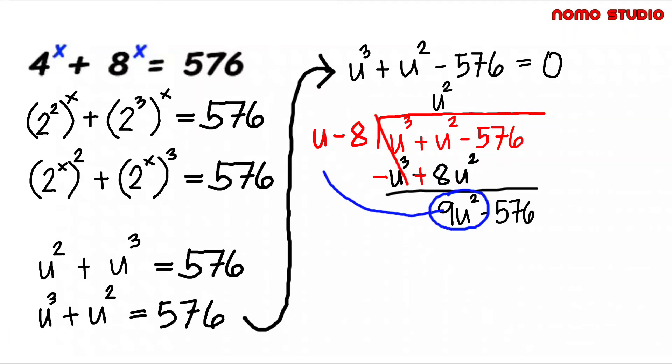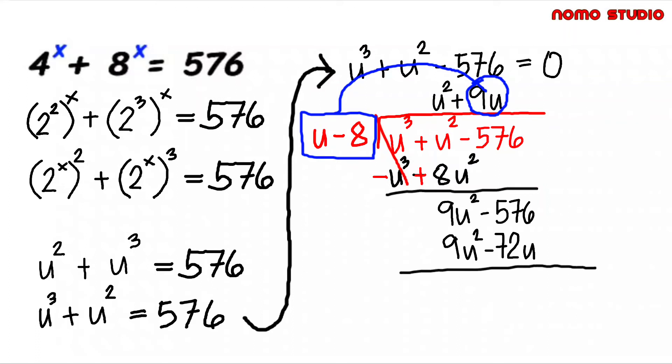9u squared divided by u, that is 9u. Then 9u times u minus 8, it will give us 9u squared minus 72u. Change all signs, so this will be 0. Then 72u minus 576.